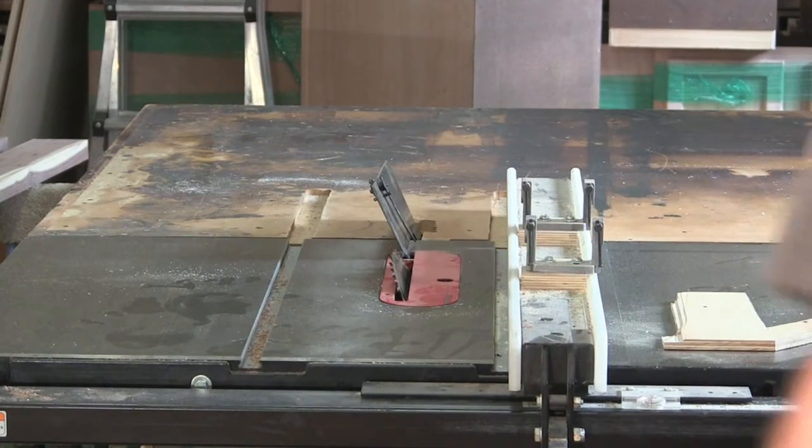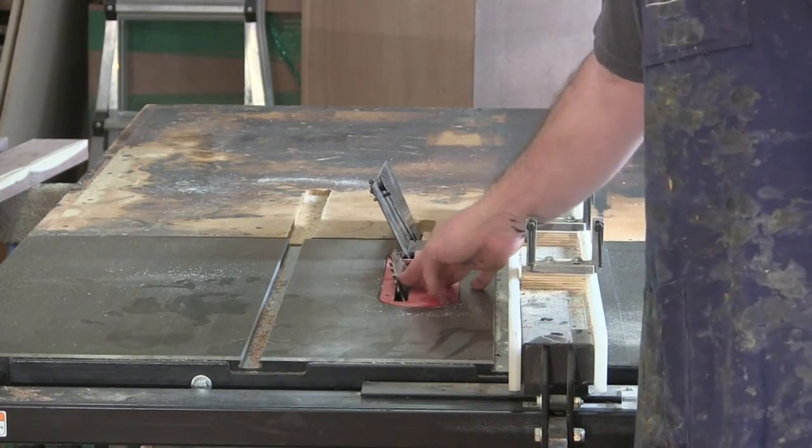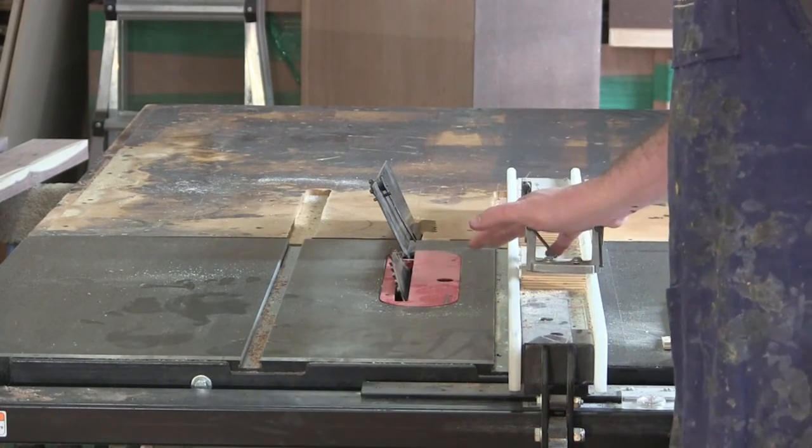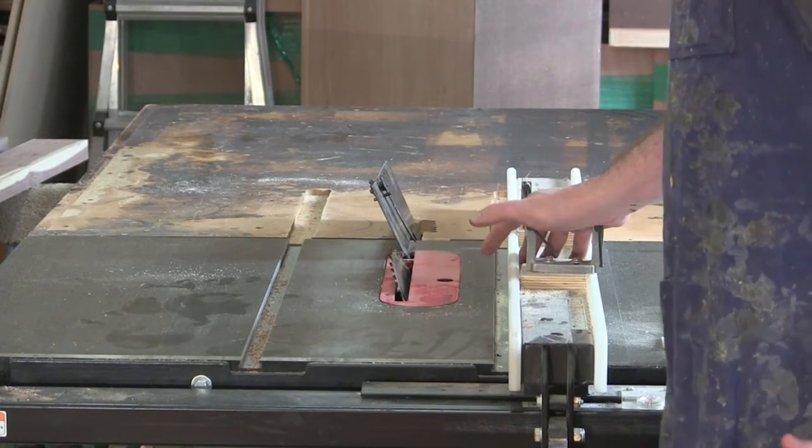The next step happens on the table saw. All I've done is tilted my blade to 25 degrees, set my fence at five inches, and I'm just going to run them through.